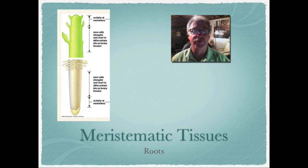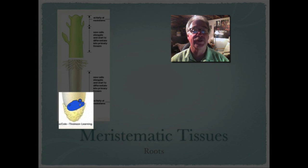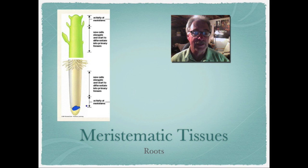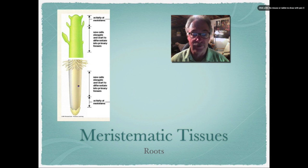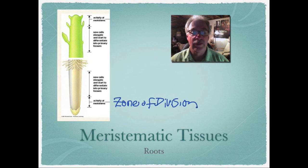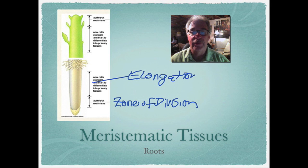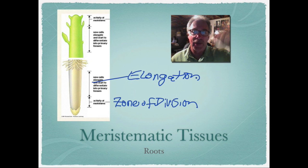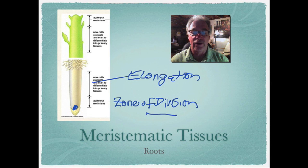On the root side of things, it's pretty much the same. The apical meristem is usually found right in the tip area. This specialized group of cells will continue to divide, entering the zone of division where they're rapidly dividing. Then there's the zone of elongation, where the cells begin to mature. As the name implies, it elongates to give the roots their length and also gives the roots the power to push through soil particles.